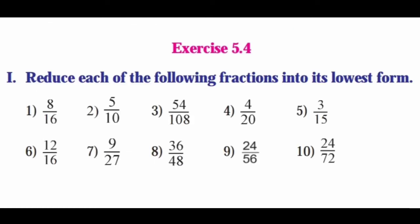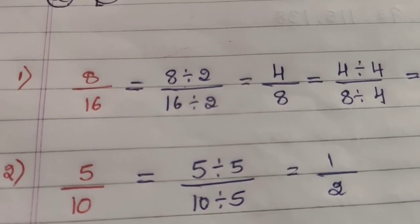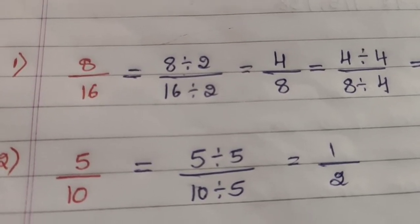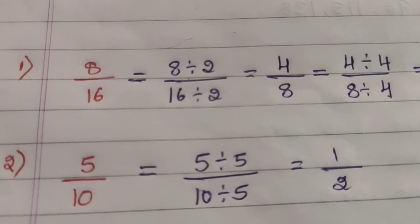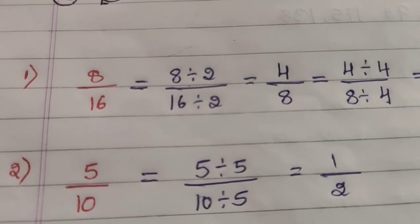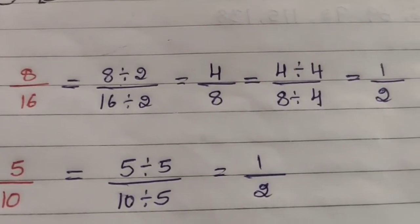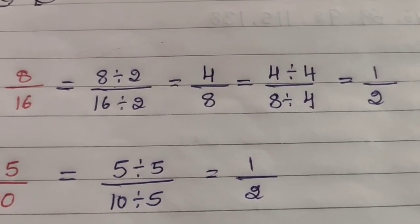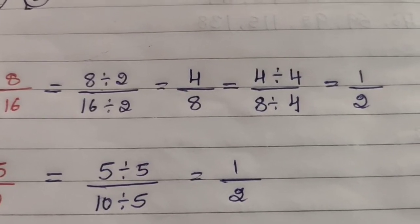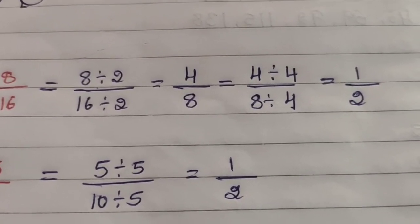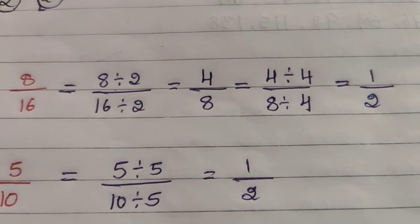Let's see Exercise 5.4. First question: reduce each of the following fractions to its lowest form. Question 1 — 8/16: divide by 2 to get (8÷2)/(16÷2) — 2 fours are 8, 2 eights are 16 — giving 4/8. Then divide by 4: (4÷4)/(8÷4) — 4 ones are 4, 4 twos are 8 — giving 1/2.